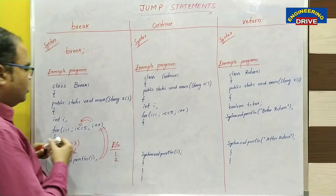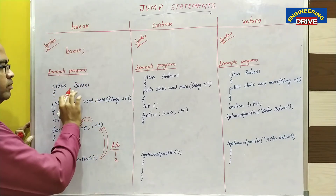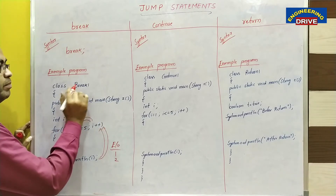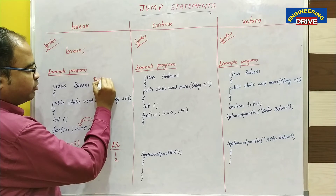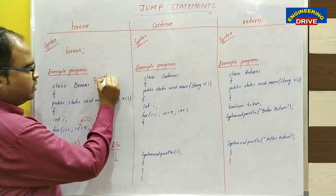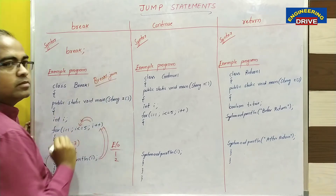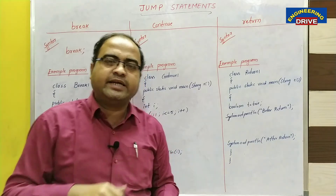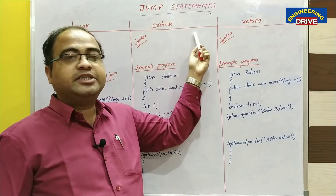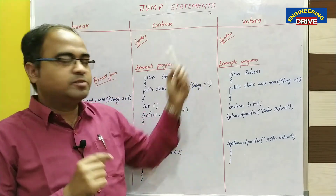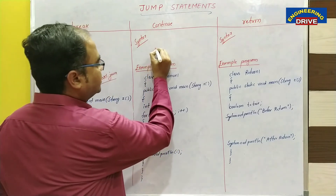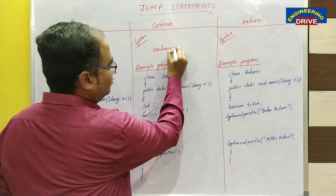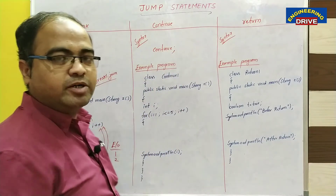Save this Java program with the name of the class that contains the main method, which is Break1 — so save it as break1.java. Now let us move to the second type of jump statement, which is continue. The syntax to use continue is: the keyword continue followed by a semicolon — similar syntax to break.